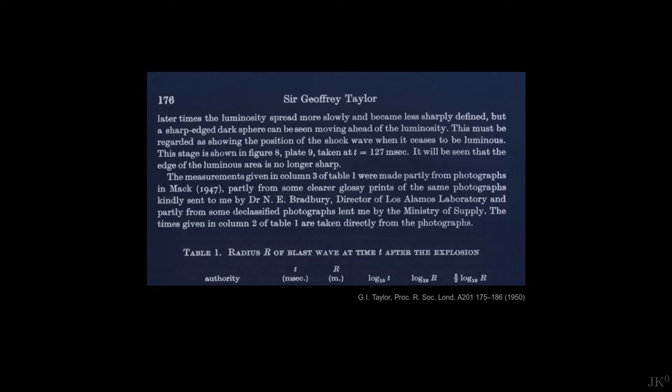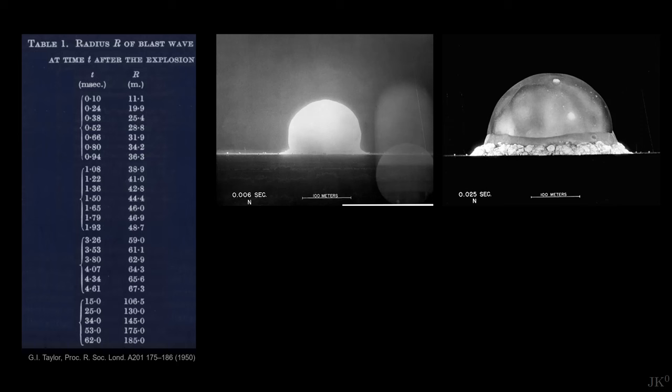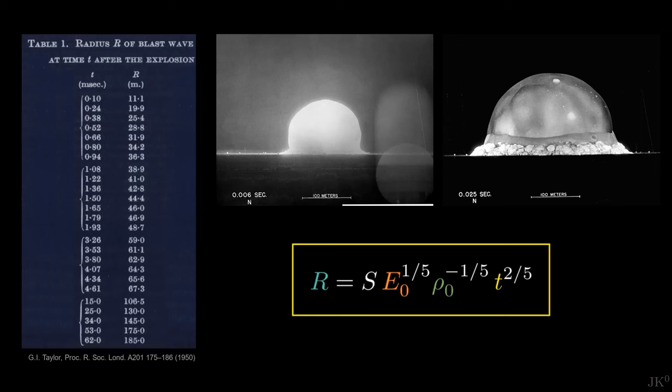What I do know is where Taylor got the images from, because he wrote it on the third paragraph of his paper. Taylor used 17 photographs from Mack's declassified report in addition to seven declassified photographs from the British Ministry of Supply. Using the timestamps and length scale on each photograph, he determined the radius at different times. He obtained 25 pairs of radius versus time, and then he used his formula for the radius of the blast.